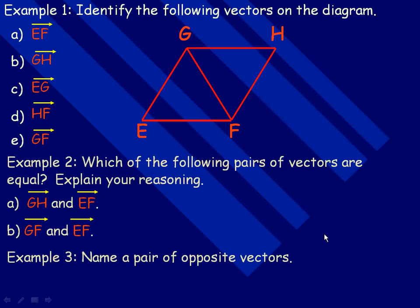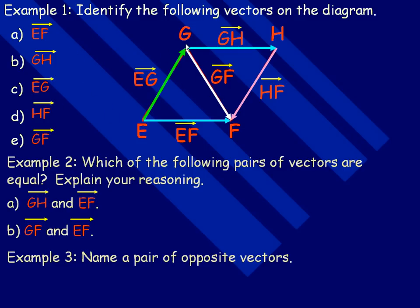In the example on this page, we're asked to identify the following vectors in the diagram. So the vector EF would be the vector that goes from E to F. So this would be the vector EF. GH is a vector that goes from G to H. So GH would look like that. EG would be this vector here going from point E to point G. HF would start at H and go towards F along this side of the parallelogram. And GF would be this vector right here from point G pointing towards point F.